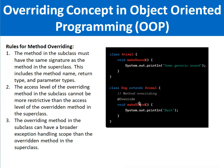The makeSound method is present in the base class and also in the child class, but in the child class we have overridden — redefined — the scope of the makeSound method. Once you create an object of the Dog class and call the method makeSound, the compiler will call the child class's makeSound rather than the base class's makeSound. This is the concept of overriding: the same method with the same signature — return type, parameters — is defined in both the base class and the child class, but the implementation is redefined in the child class.